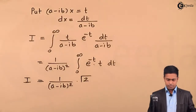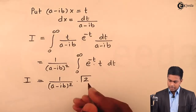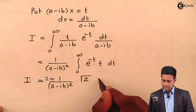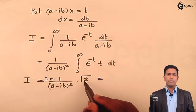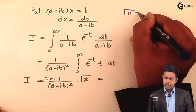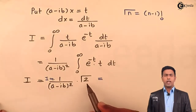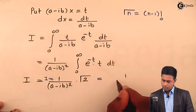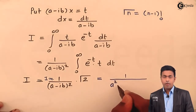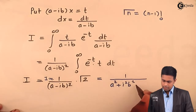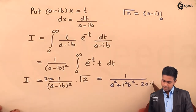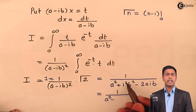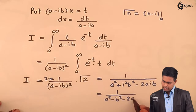The value of gamma(2) is 1 factorial, since gamma(n) equals (n minus 1) factorial, so gamma(2) equals 1 factorial equals 1. Now let's expand (a minus ib) squared: that gives a squared plus i squared b squared minus 2aib. Since i squared equals negative 1, this becomes a squared minus b squared minus 2aib. So I equals 1 upon (a squared minus b squared minus 2aib).